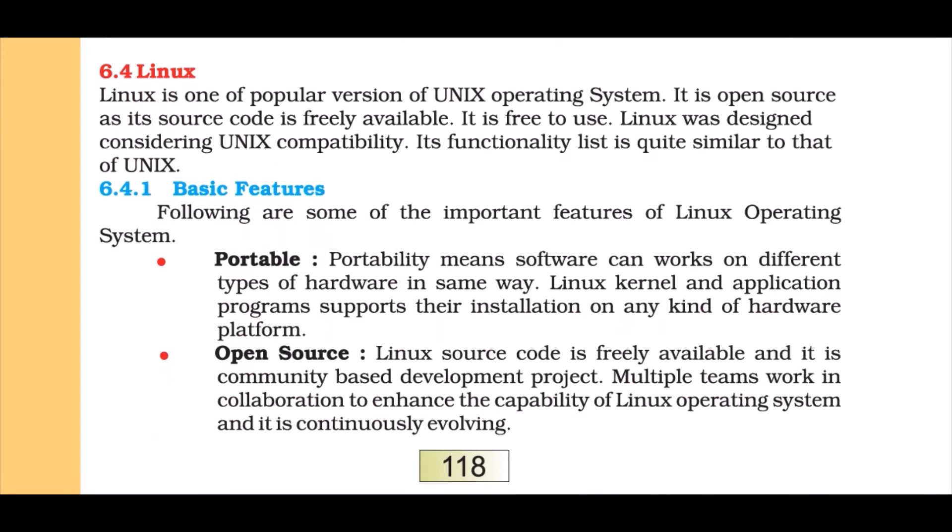Linux is one of the popular versions of the Unix operating system. It is open source — its code is freely available, unlike Windows whose code cannot be changed. The availability of this code made it popular; users can download the code or get an ISO file and update or code their own version of Linux or Unix operating system.